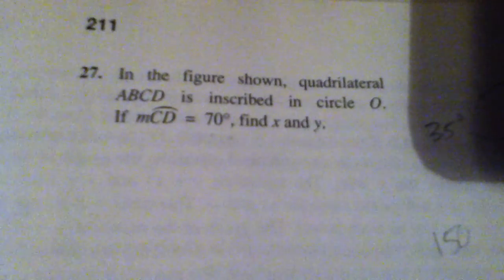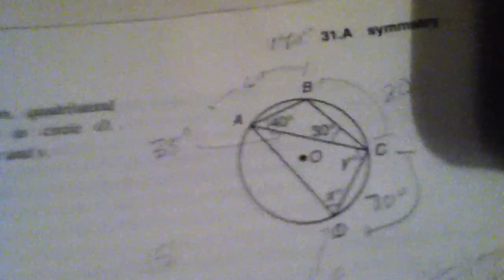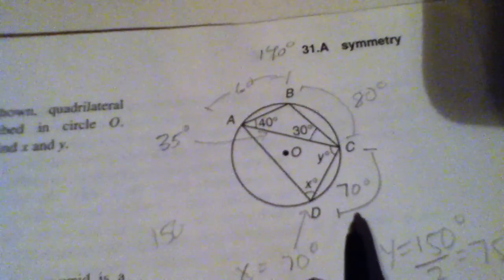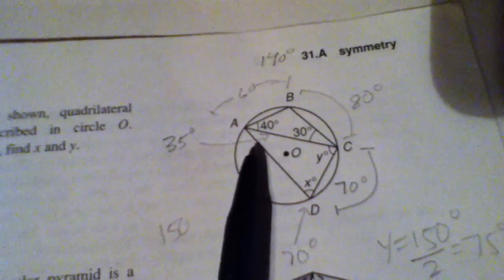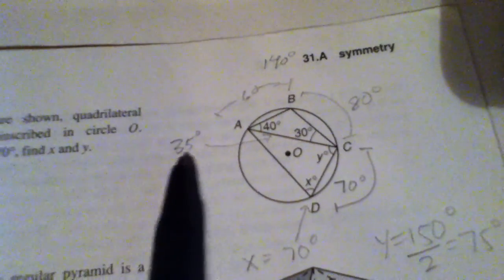So it says we have CD is 70. So I just kind of try to do this without a shadow. There's the 70. And so that gave me this angle right here is an inscribed angle.